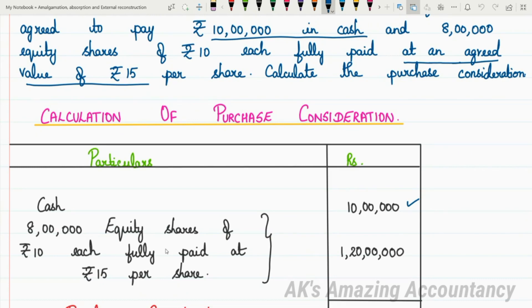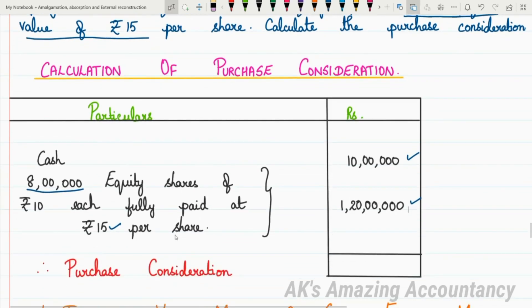So for shares: 8 lakh into 15 gives Rs. 1 crore and Rs. 20 lakhs in the form of shares. Rs. 10 lakhs is in the form of cash and Rs. 1 crore 20 lakhs is in the form of shares. The total purchase consideration will be Rs. 1 crore and Rs. 30 lakhs. This is the answer for this problem. This is what the Net Payment Method is.